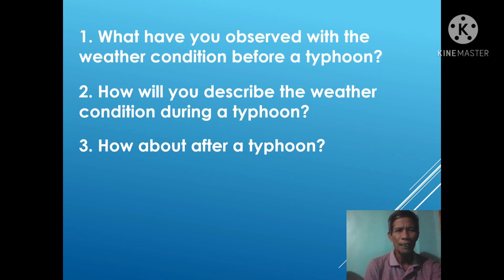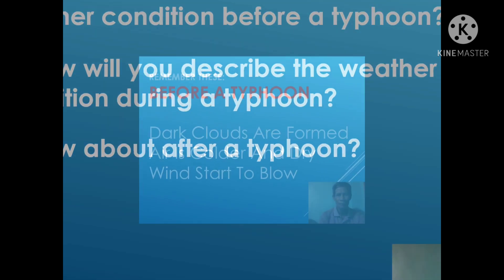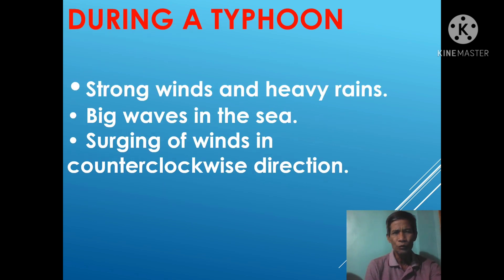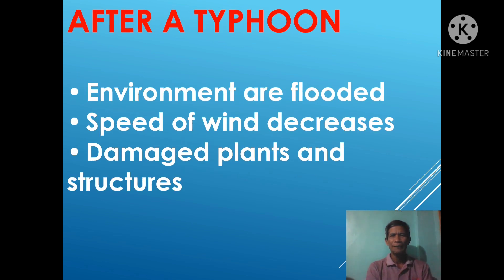Now let us answer the following questions: 1. What have you observed with the weather condition before a typhoon? 2. How will you describe the weather condition during a typhoon? 3. How about after a typhoon? Before a typhoon: dark clouds are formed, air is colder, and dry winds start to blow. During a typhoon: strong winds and heavy rains, big waves in the sea, surging of winds in a counterclockwise direction. After a typhoon: environments are flooded, speed of wind decreases, and there are damaged plants and structures.